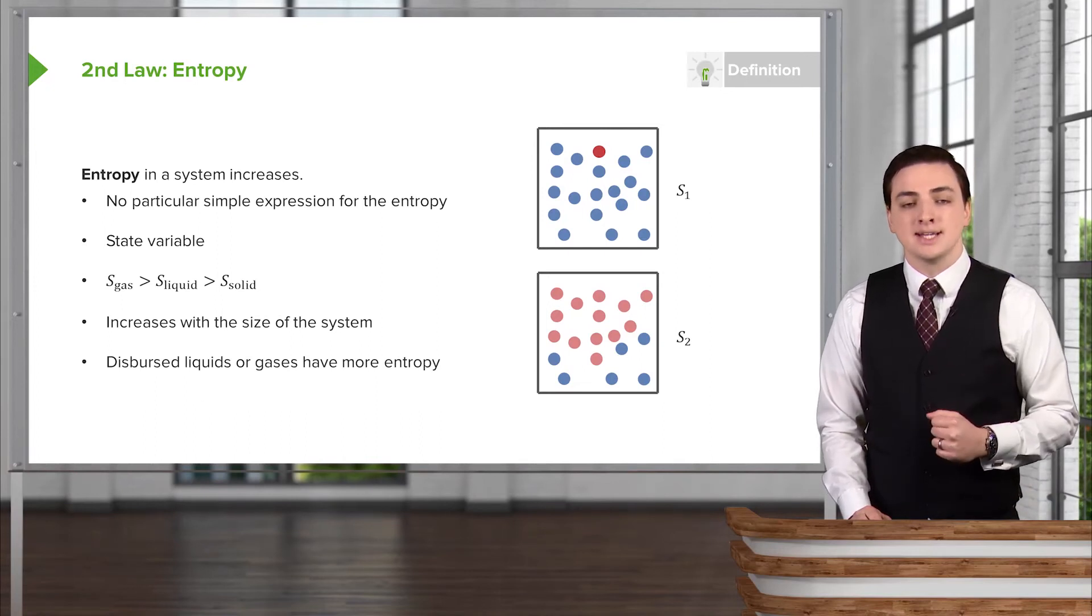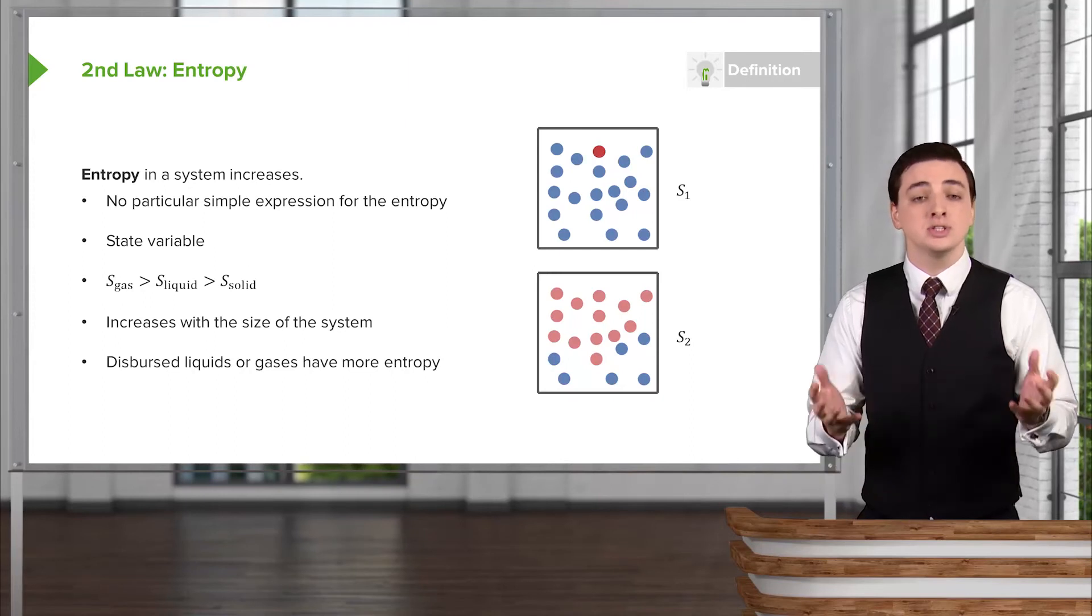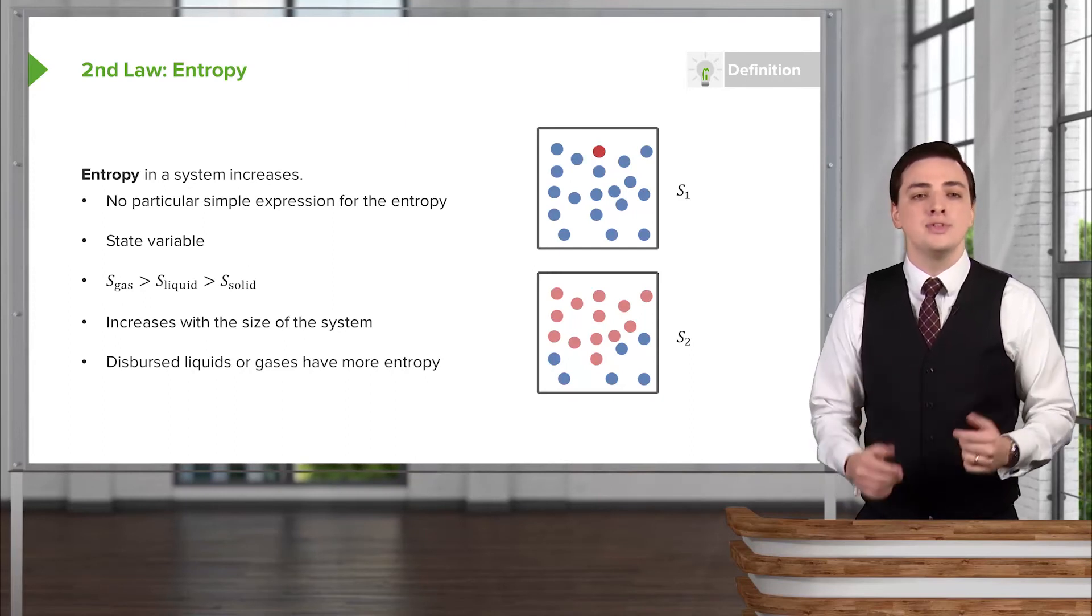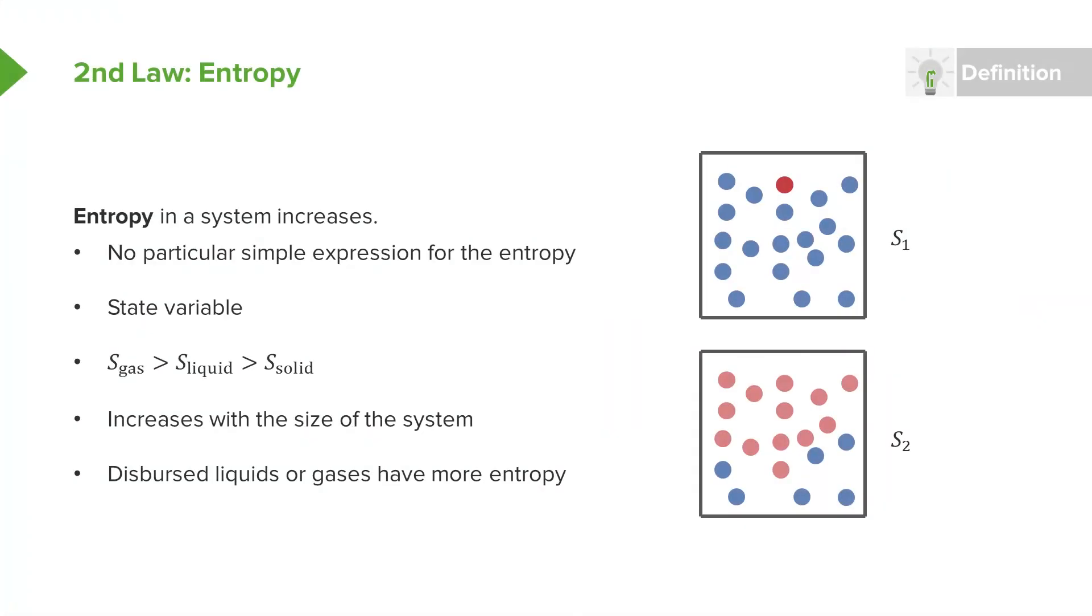For dispersed liquids and gases, we also have the rule that the entropy for these dispersed liquids and gases would be more than the entropy for a more collected system. And again, some of these principles follow a good intuition for what entropy should do if we consider entropy as a disorder or an amount of chaos in a system.